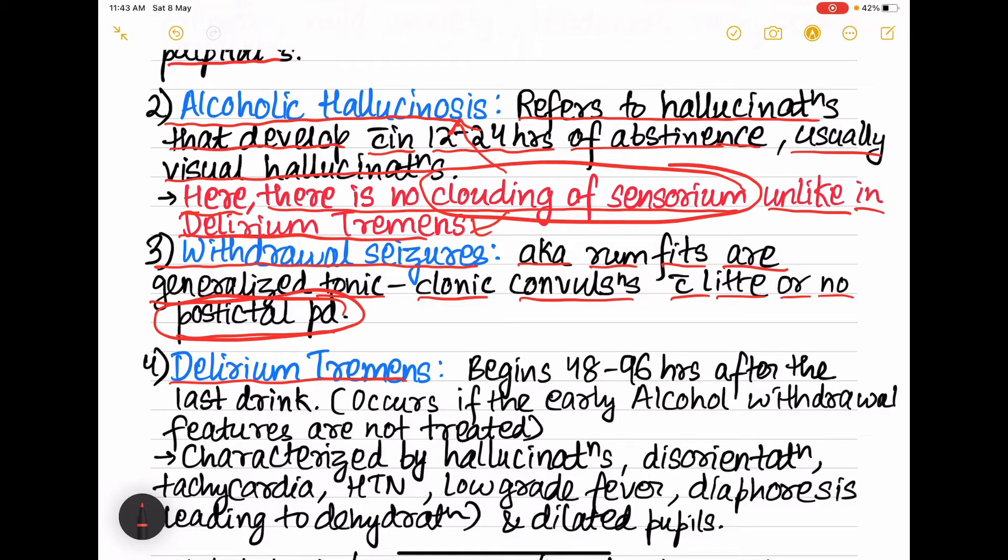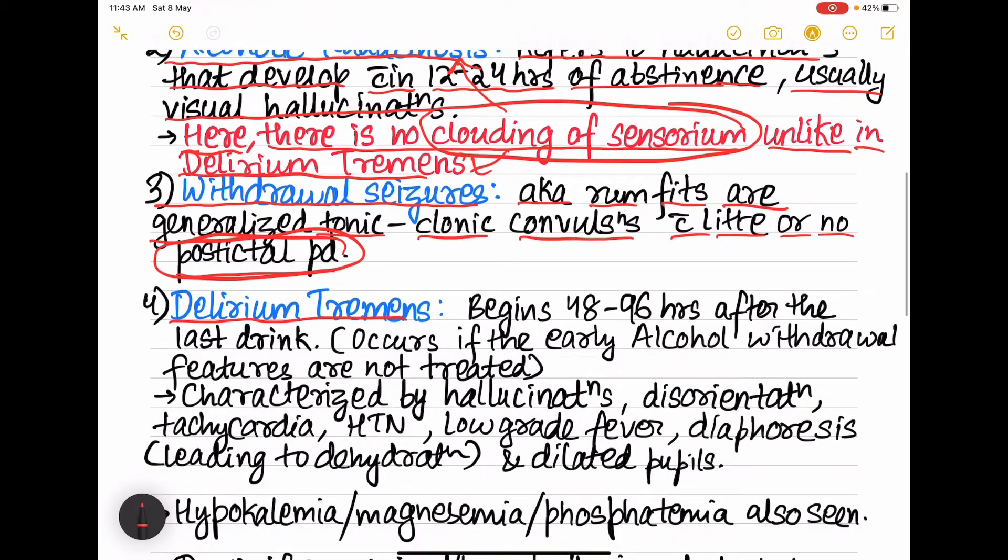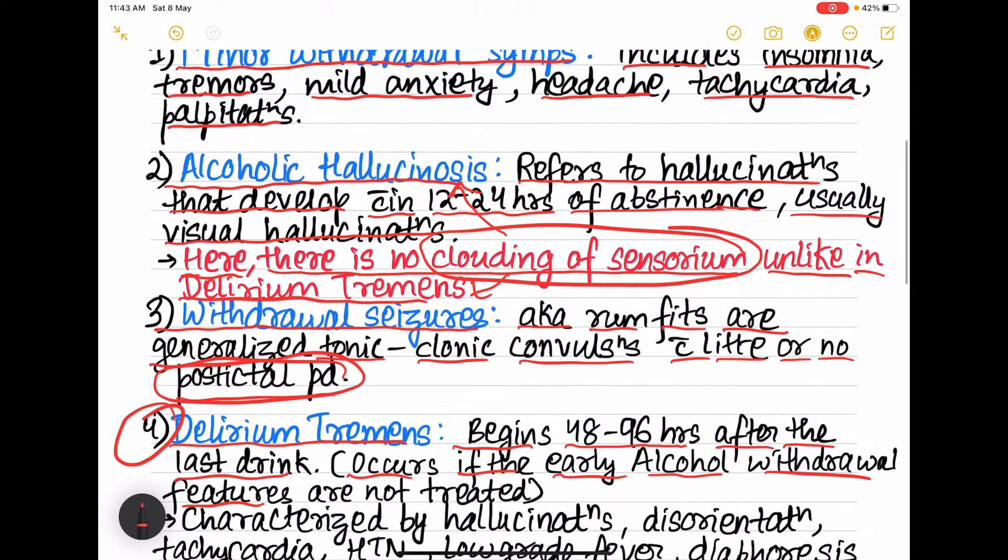Next is delirium tremens, very important. It begins 48 to 96 hours after the last drink. Occurs only if the early alcohol withdrawal features, that is withdrawal seizures, then alcoholic hallucinosis, then minor withdrawal symptoms are not treated properly.